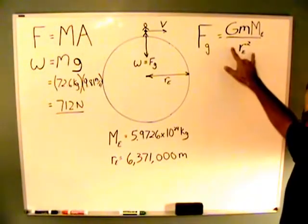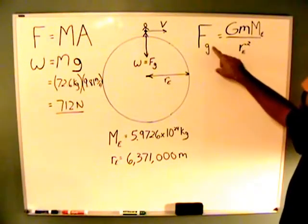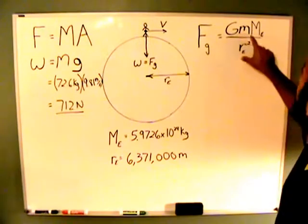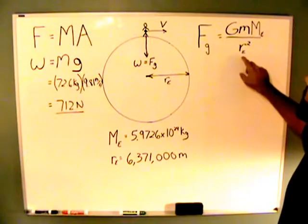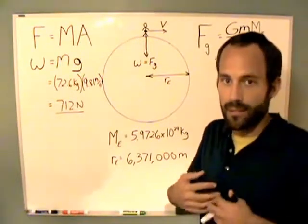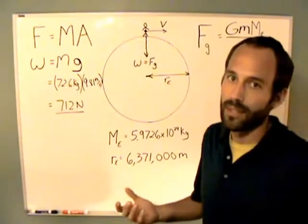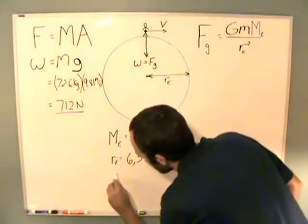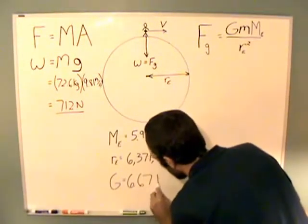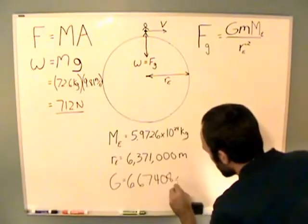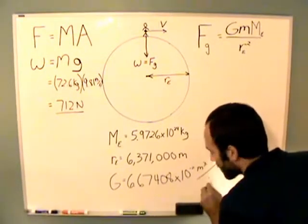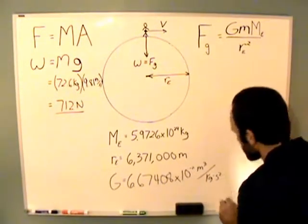Over here, we have the equation for gravity. The force of gravity is equal to the gravitational constant times the mass of one object, in this case, me, represented by little m, times the mass of another object, which would be the Earth, divided by the distance between them squared, which in this case would be the radius of the Earth. You should actually add the distance to my center of mass from the Earth's surface, but it's so insignificant that it doesn't really matter. The gravitational constant, big G, is equal to 6.67408 times 10 to the negative 11 meters cubed over kilograms times seconds squared.